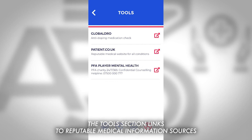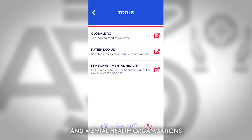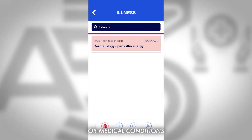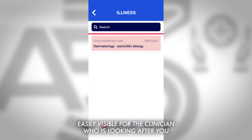The tools section links to reputable medical information sources such as best recovery, nutrition and mental health organisations. Major problems such as major injuries or medical conditions like asthma, diabetes or an allergy are highlighted at the top of the problems list to make it easily visible for the clinician who is looking after you.